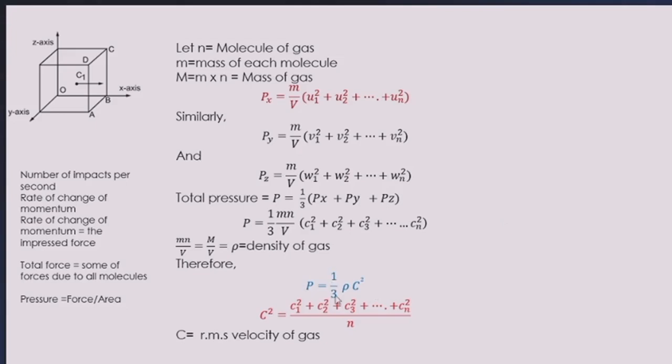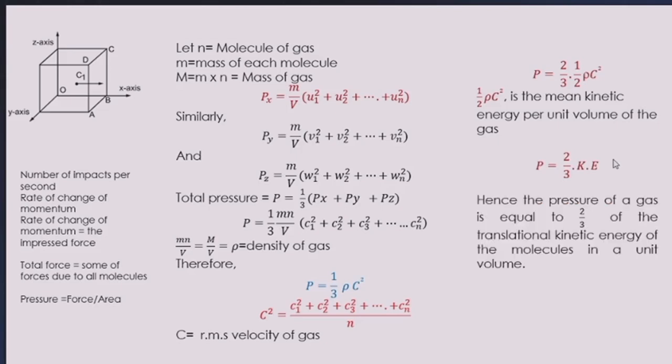Now just we will make slight changes in this expression. So we are multiplying and dividing by 2. So we get P is equal to 2 by 3 into 1 by 2 rho C square. And this term half into rho C square is similar to half into M V square. So this can be taken as the mean kinetic energy per unit volume of the gas. And hence the expression now becomes P is equal to 2 by 3 times kinetic energy. And thus we can say that the pressure of the gas is equal to 2 by 3 times the translational kinetic energy of the molecules in a unit volume.